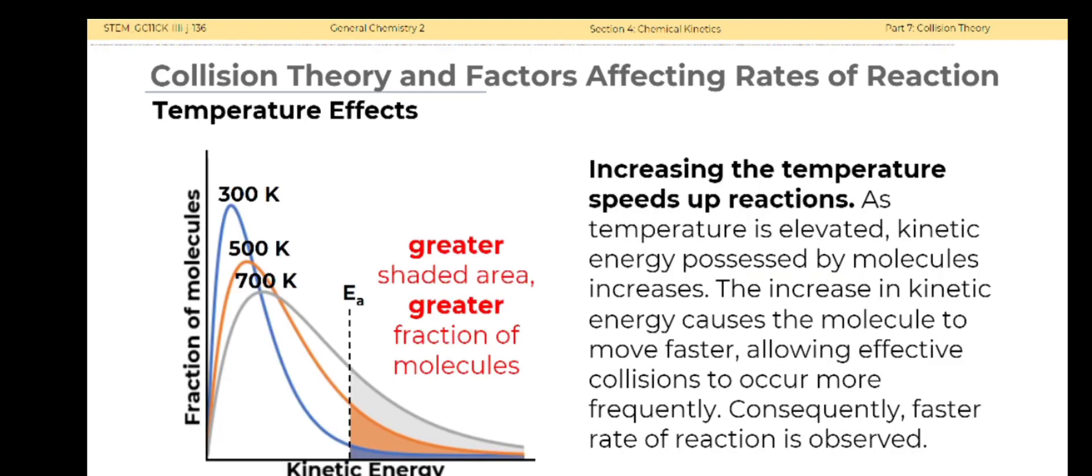Increasing the temperature speeds up reactions. As temperature is elevated, kinetic energy possessed by molecules increases. The increase in kinetic energy causes the molecules to move faster, allowing effective collisions to occur more frequently. Consequently, faster rate of reaction is observed. Looking at the distribution plot, we can see that increasing the temperature increases the fraction of molecules that can achieve the activation energy, suggesting that the energy barrier is easier to overcome and the reaction proceeds with a faster rate.